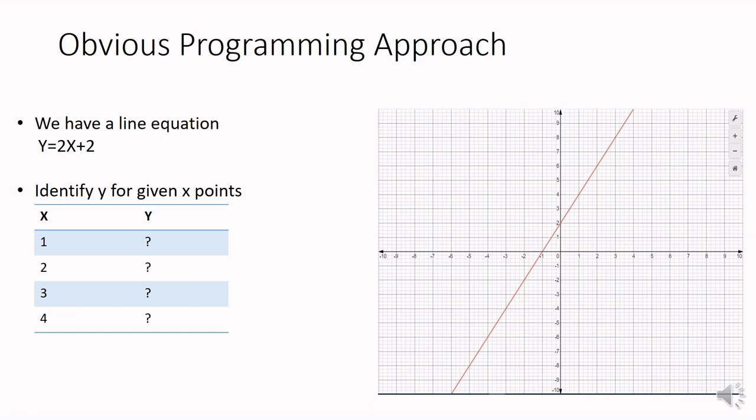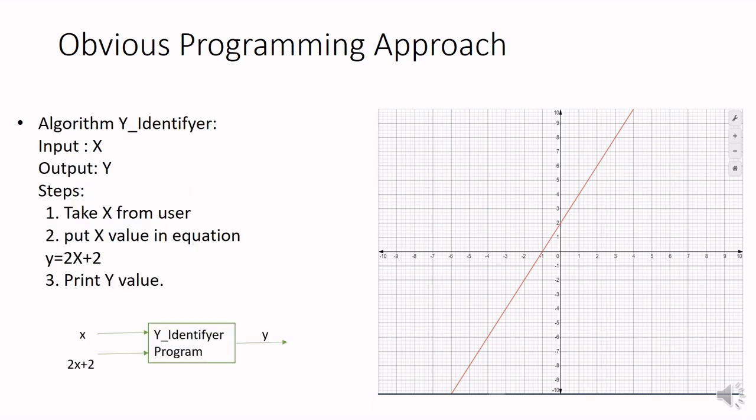So possible values for x are 1, 2, 3, 4 and corresponding y values we have to identify through a program. For that we have to write down an algorithm y identifier. It is going to take x as an input, it will generate y as an output. So there are different steps. Take x from the user, then put x value in equation y equals 2x plus 2, and then print the y value.